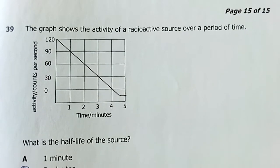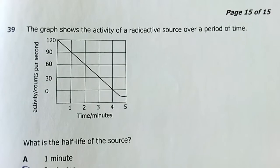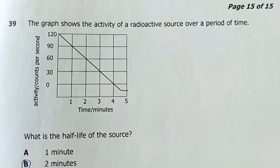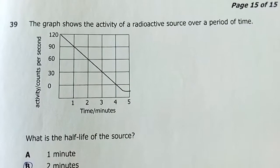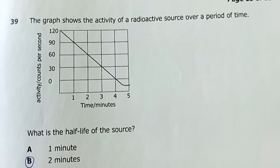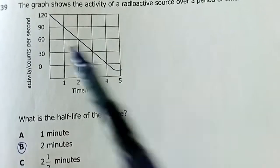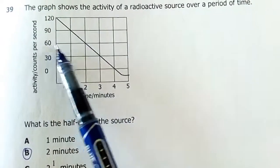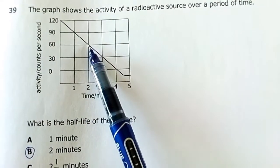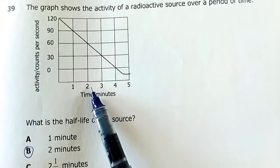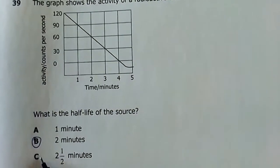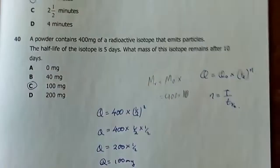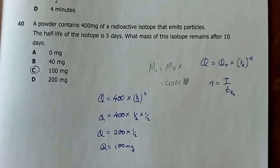Question 39: The activity of a radioactive source is plotted over time. Starting activity is 120; half of that is 60. From the graph, it takes 2 minutes to reach 60 — so the half-life is 2 minutes. Answer is B.